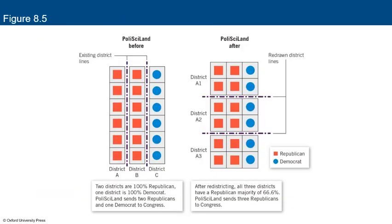In a gerrymandering scenario illustrated in the textbook using 'Policy Land': originally two districts are 100% Republican and one is 100% Democrat, sending two Republicans and one Democrat to Congress. After redistricting, all three districts have a Republican majority of 66.6%, and Policy Land sends three Republicans and no Democrats to Congress — because Democratic voters were cracked and Republican voters were packed into each of the districts. And it is legal to do this.